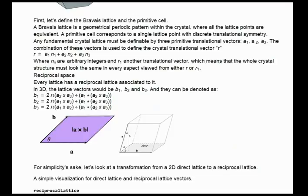Looking at b1, b1 equals 2π times the cross product of vectors a2 and a3 from our direct lattice, divided by the triple scalar product of a1, a2, and a3. In which case, this cross product of a2 and a3 is the area of our two vectors, and the triple scalar product is the volume of our system.